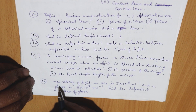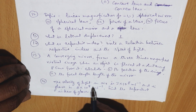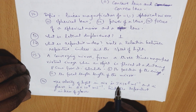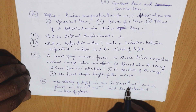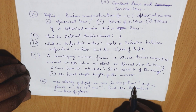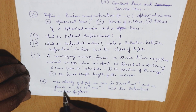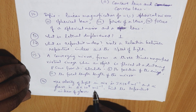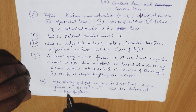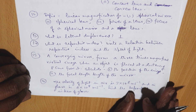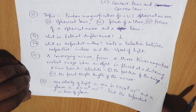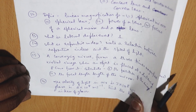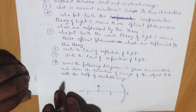Next question: the velocity of light in air is 3×10⁸ m/s and in glass is 2×10⁸ m/s. Find the refractive index of the glass.